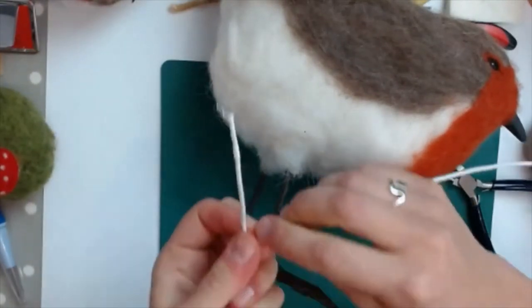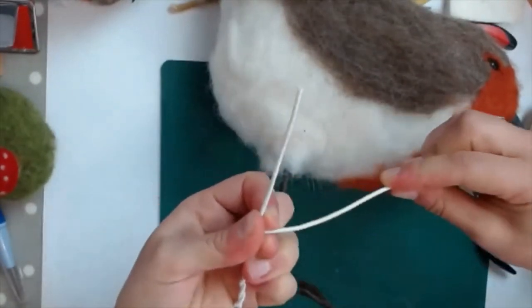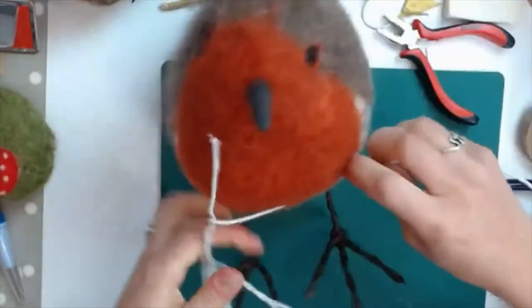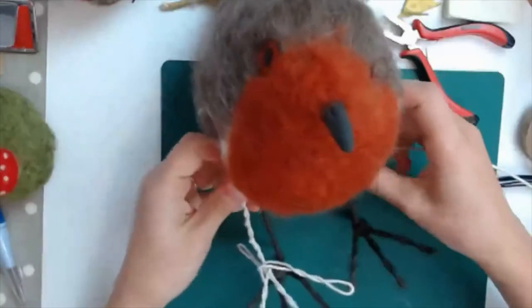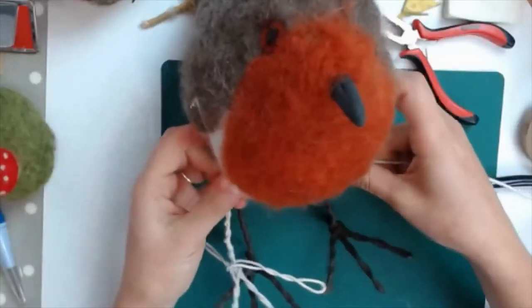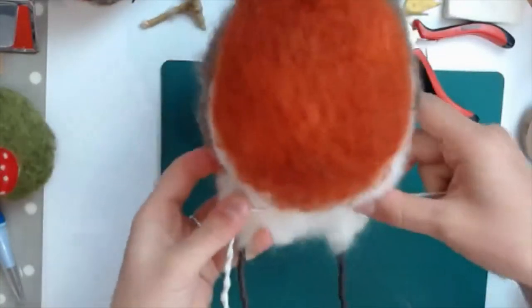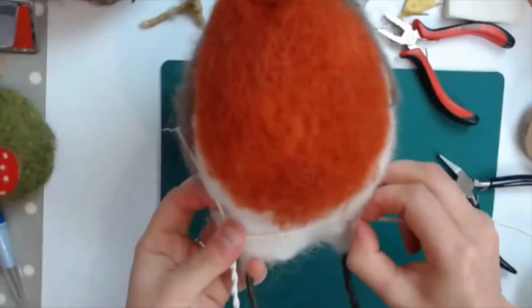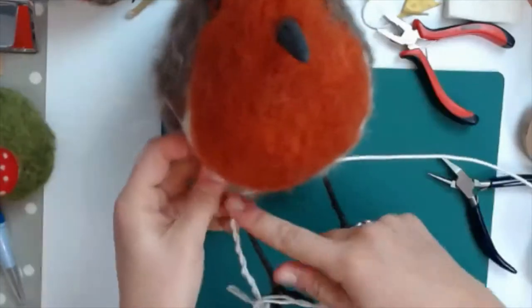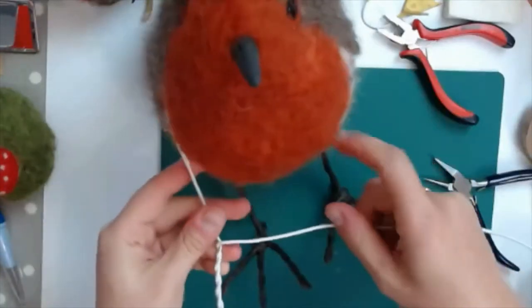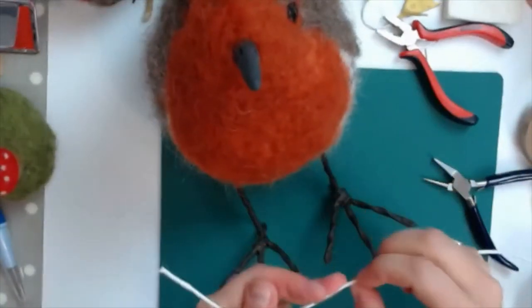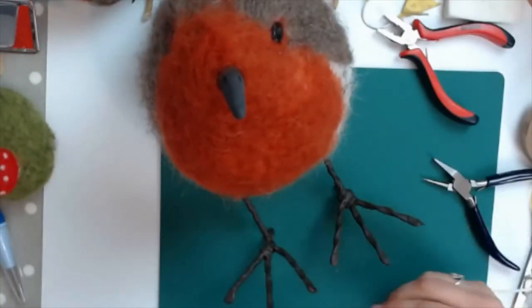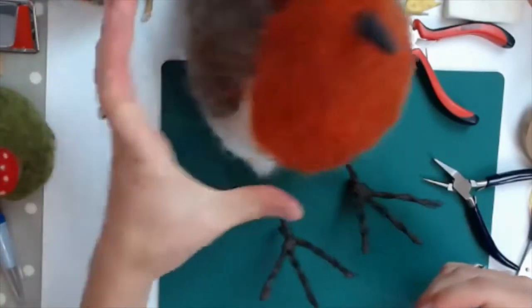And then I'm going to bend the wire. So it comes across, and that part of the wire will actually sit underneath the body. So the two legs are attached together by that piece of wire underneath the body of the bird. That piece of wire in the middle helps to hold the weight of the robin. And then we're going to come back down for the other leg.